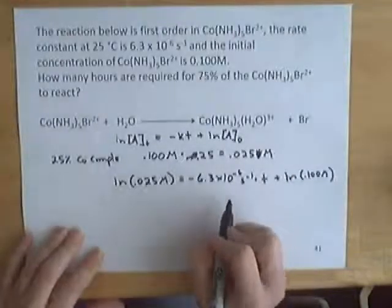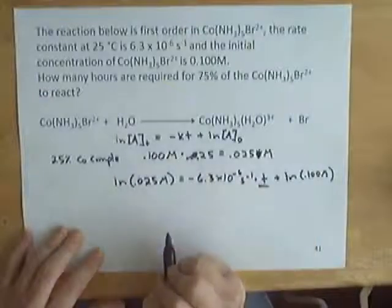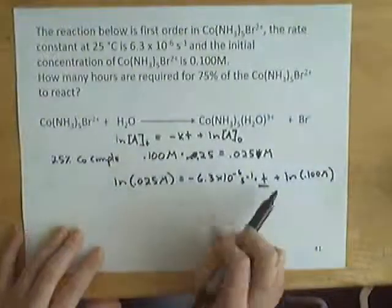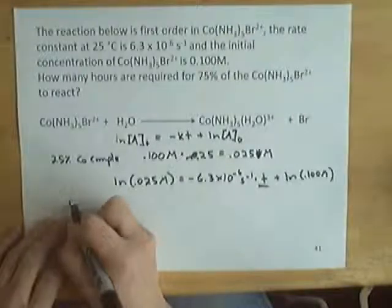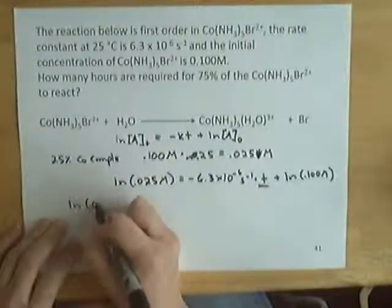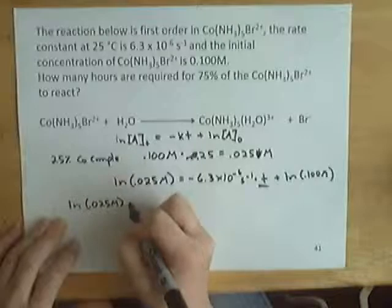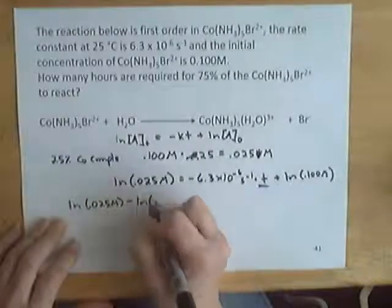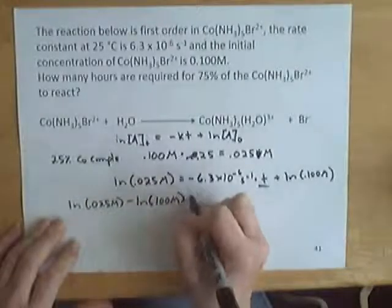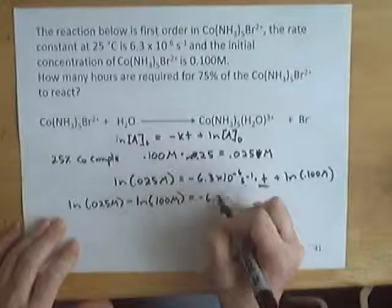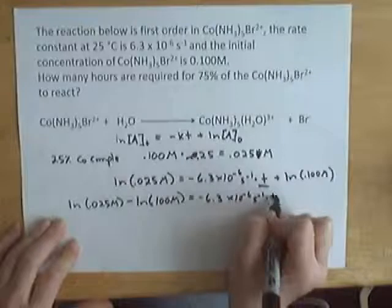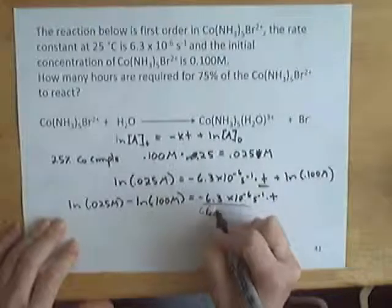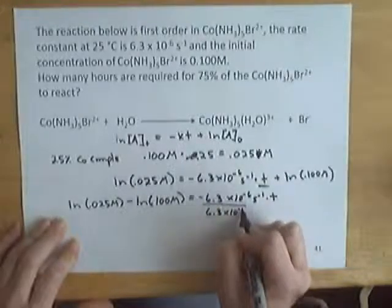I'm going to rearrange this because what we're trying to get is time by itself. I'm going to subtract this natural log of 0.1 from both sides. So I have natural log 0.015 minus natural log of 0.100 molar, and then I'm going to divide both sides by that rate constant.